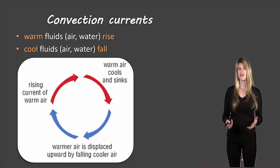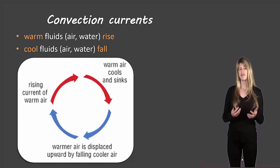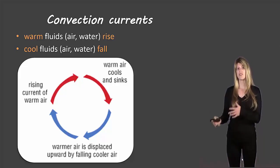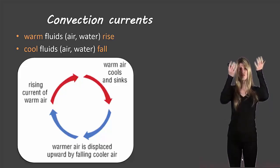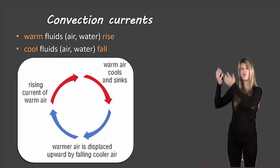So first of all, what are convection currents? Well they occur in fluids, so those are liquids or gases. When it relates to the Earth's climate system, we're talking about in the water and in the air. Those are our two main areas for convection currents. And what happens is that warm fluids, so the warm air, the warm water rises, and then the cool air, the cool water falls.